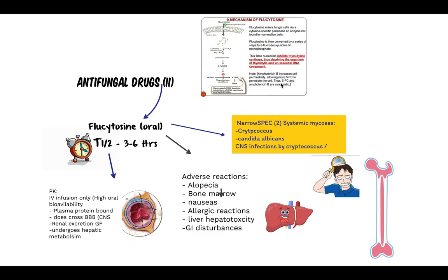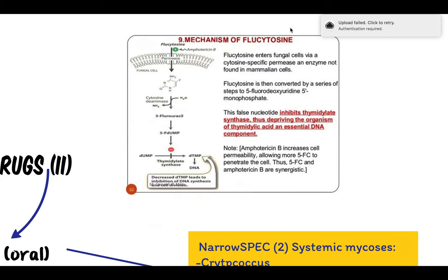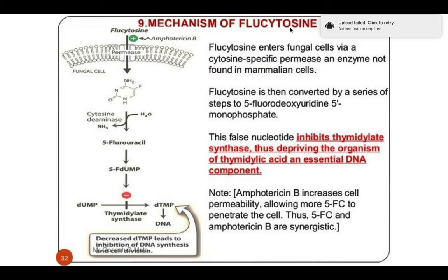Flucytosine — the third antifungal drug used to treat systemic mycosis. Flucytosine works by a different mechanism of action: it enters a fungal cell via a cytosine-specific enzyme, then is converted into 5-fluorouracil. This goes on to block thymidylate synthase, whose function is to synthesize pyrimidines and thymidine — nucleosides important in DNA synthesis. By blocking thymidylate synthase, DNA synthesis cannot occur.